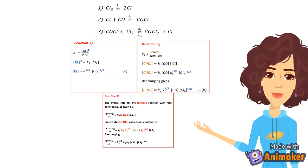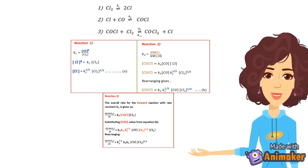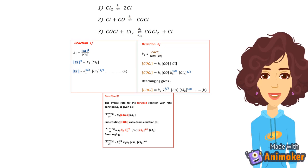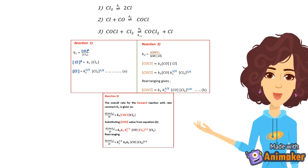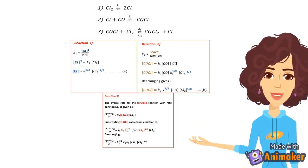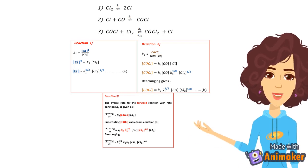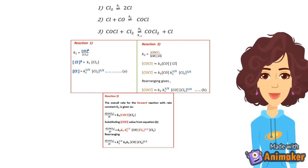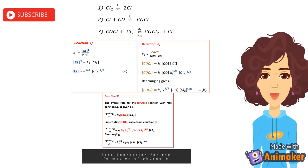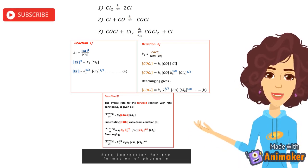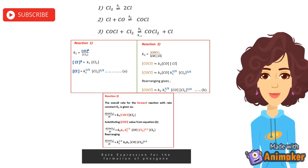Rearranging the equation, we get d[COCl2]/dt equals K1 raised to half times K2 times K3 times concentration of CO times concentration of Cl2 raised to 3/2. We get Cl2 raised to 3/2 by multiplying Cl2 raised to half by Cl2, with the powers adding up to give 3/2. This equation is the rate expression for the formation of phosgene.